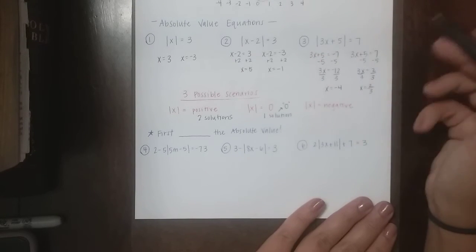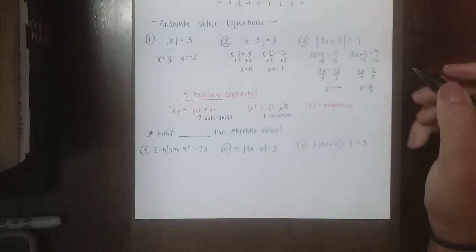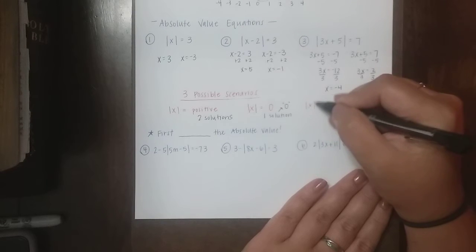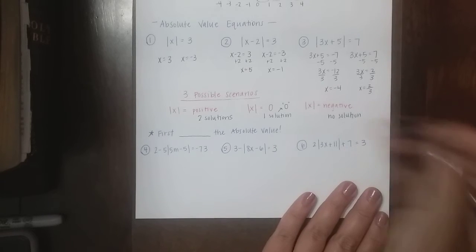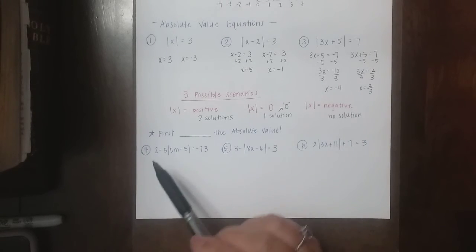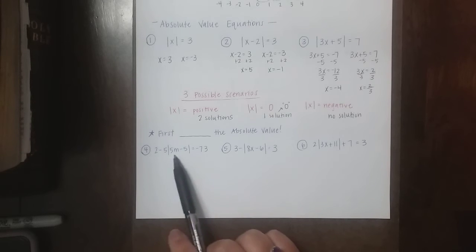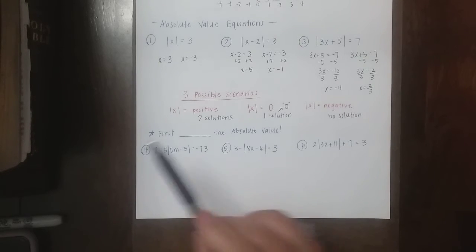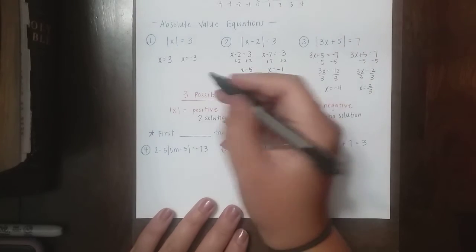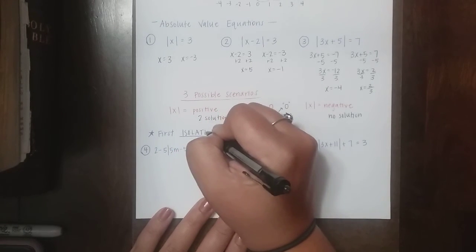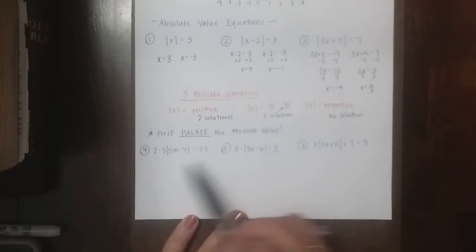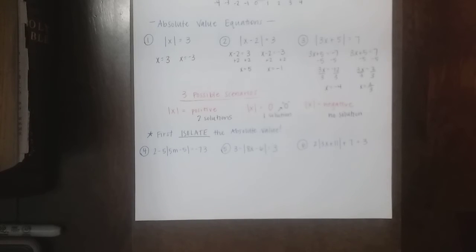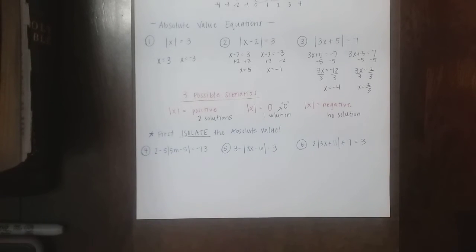If my absolute value equals a negative number — remember, we don't ever have negative distances — then I have a no solution problem. For the next three examples, they've got some more steps. The first thing you have to do is isolate the absolute value, because we've got some numbers outside the absolute value. I've got to get rid of all those extra numbers, then decide if I'm going to have two solutions, one solution, or no solutions.